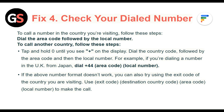Fix 4: Check your dialed number. To call a number in the country you are visiting, dial the area code followed by the local number. To call another country, tap and hold 0 until you see the plus sign on the display, then dial the country code followed by the area code and the local number. For example, if you are dialing a UK number from Japan, dial +44. If that format doesn't work, use the exit code of the country you are visiting, followed by the destination country code, area code, and local number.